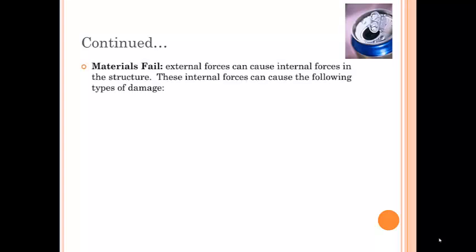Materials fail because external forces cause internal forces in the structure. These forces can cause the following types of damage. They can cause shear damage where the weight of building collapses because of shear forces or tearing forces on the building.